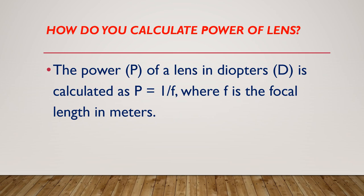How do you calculate the power of a lens? The power of a lens in diopters is calculated as P = 1/F, where F is the focal length in meters.